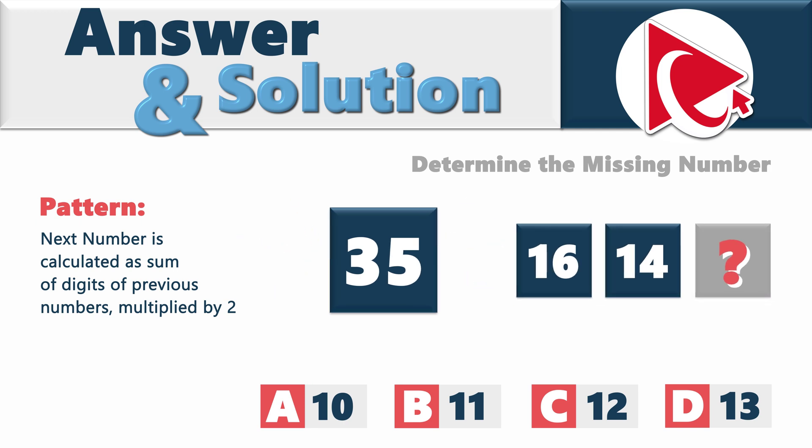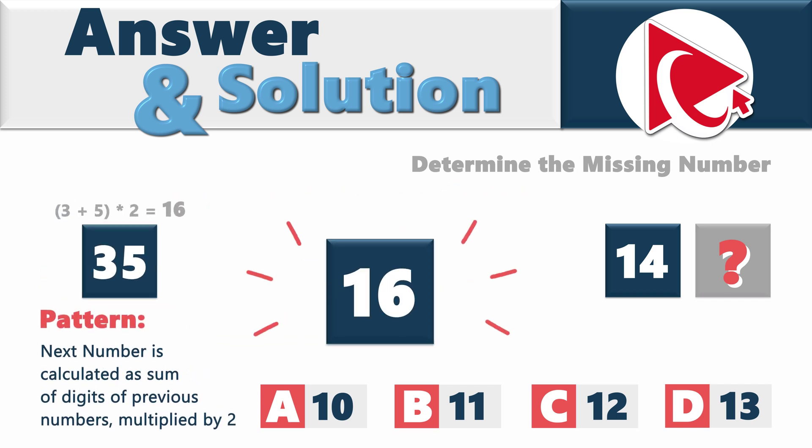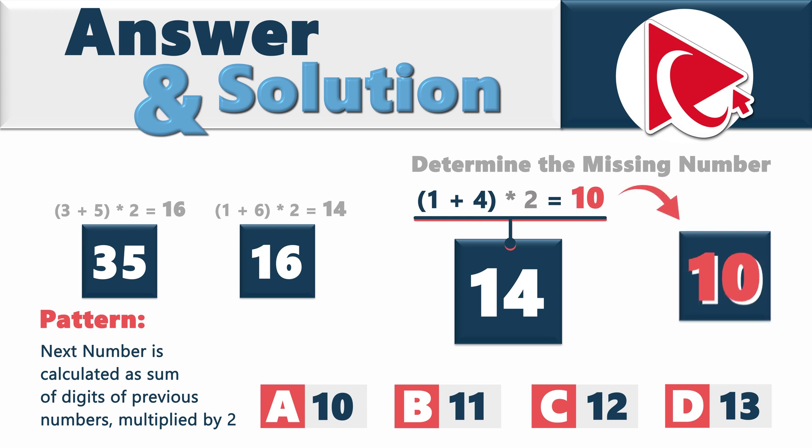Let's look at the first number. First number is 35. Two digits are 3 and 5. 3 plus 5 equals 8 multiplied by 2 equals 16. Let's go to the next number so we can continue the sequence. 1 plus 6 multiplied by 2 equals 7 multiplied by 2 and equals 14. So to calculate the missing number, we need to add 1 and 4 and multiply it by 2. 5 multiplied by 2 equals 10. So the correct answer here is choice A, 10.